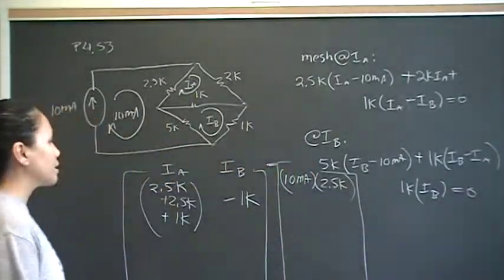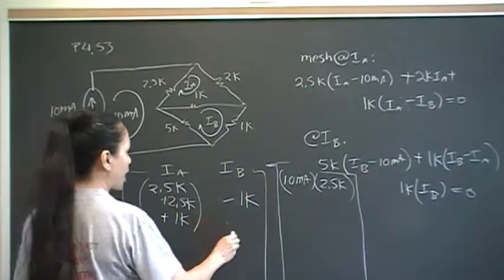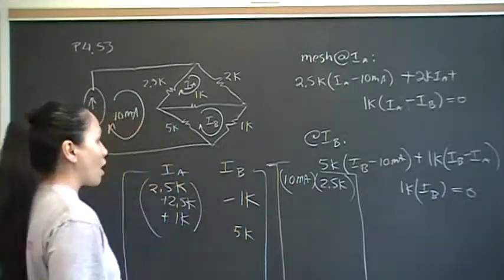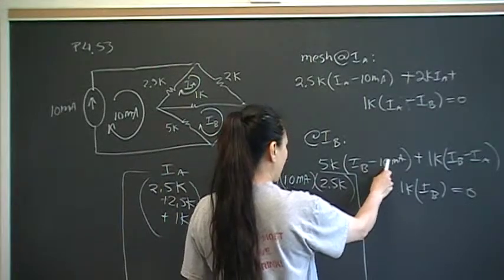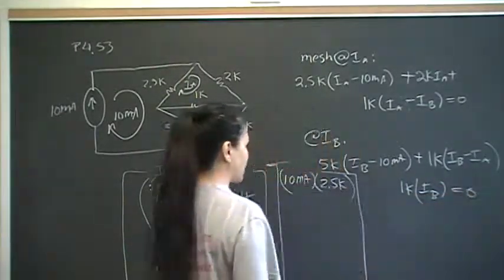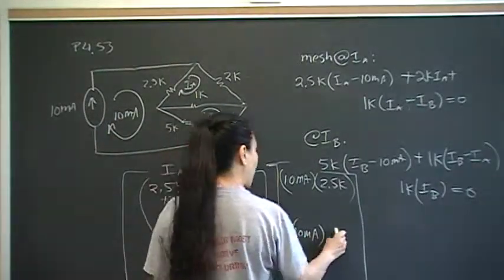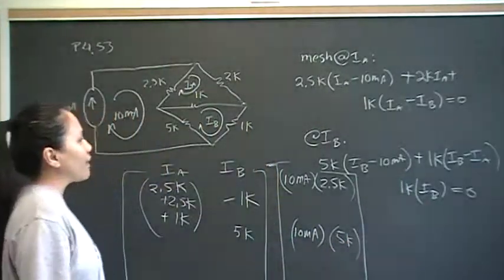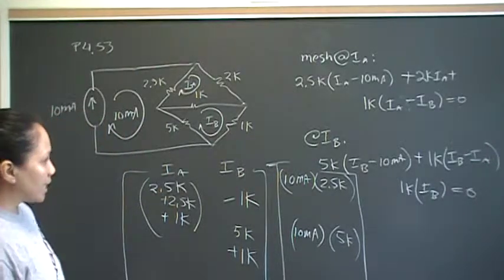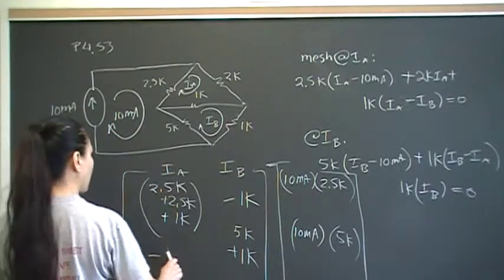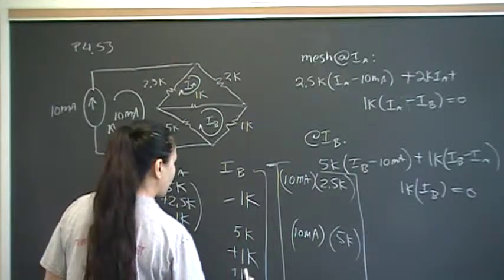The second equation of our matrix is mesh at Ib. The first term is 5k for Ia, so we've got 5k. The next term is a constant — 5k times negative 10 milliamp — going to the constants side as a positive number: 10 milliamp times 5k. The next term is plus 1k for Ia. After that is negative 1k for Ia, so negative 1k. And the final term is plus 1k.